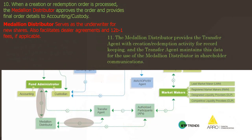Step 10: when a creation or redemption order is processed, the medallion distributor approves the order and provides final order details to accounting or custody. The medallion distributor serves as the underwriter for new shares, much like the acquisition corporations we see Citadel buy up all the time. They also facilitate dealer arrangements related to fees if applicable. Step 11: the medallion distributor provides the transfer agent with creation or redemption activity for record keeping, and the transfer agent maintains its data for the use of the medallion distributor and shareholder communications.